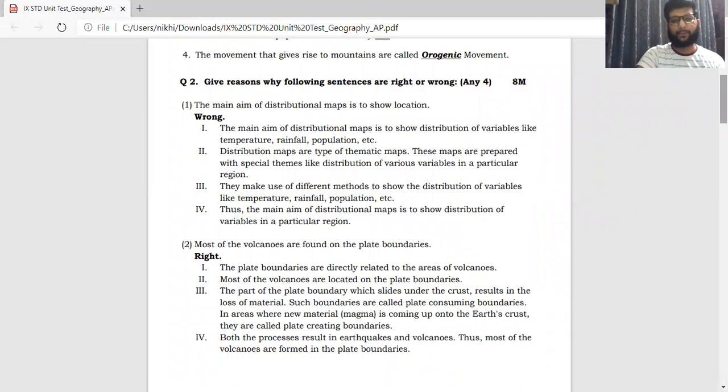So the first question is the main aim of distribution map is to show location. The answer is wrong. Again, the main aim of distribution map is to show the distribution of variables. You can show temperature, rainfall, population. More or less, distribution maps are type of thematic maps. It's a theme. And based upon that, the maps are being prepared. So these special themes like distribution of various variables in a particular region are being made on the map.